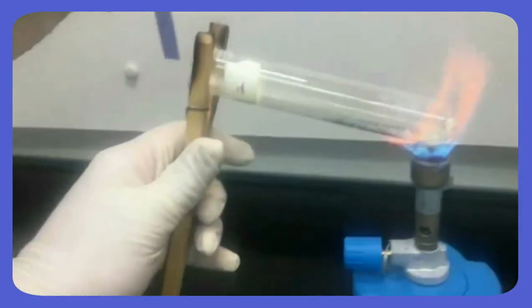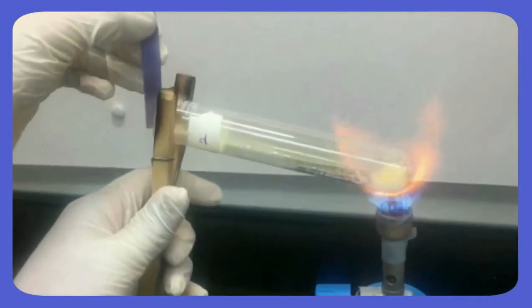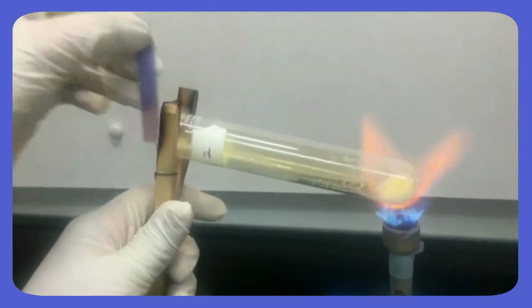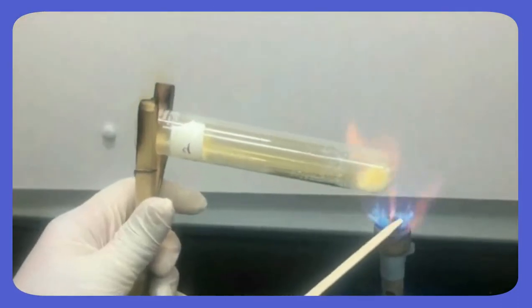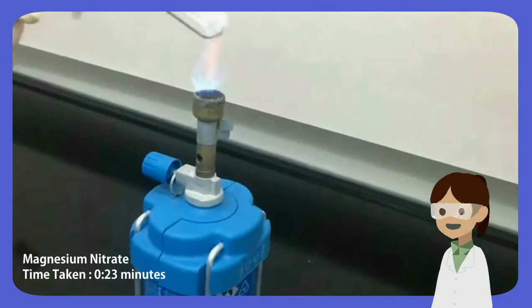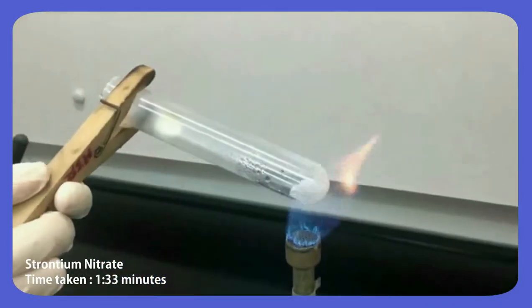Next, this moist red and blue litmus paper will be placed near the mouth of the test tube to check if the compound formed is in acidic or basic condition. Then, we will use a glowing wooden splinter to test the presence of oxygen. We then repeat the experiment using magnesium nitrate and strontium nitrate.